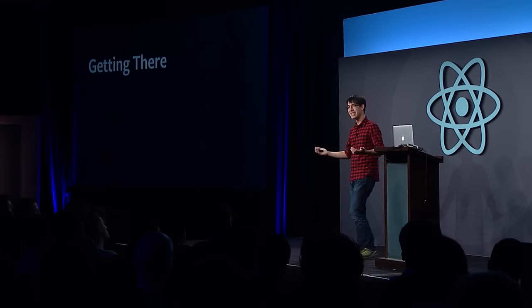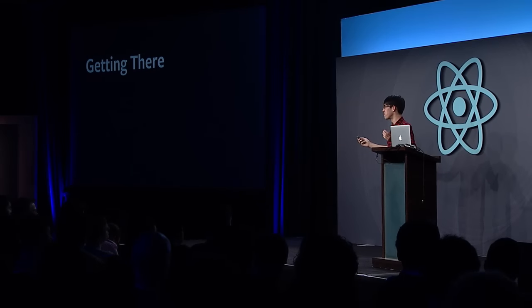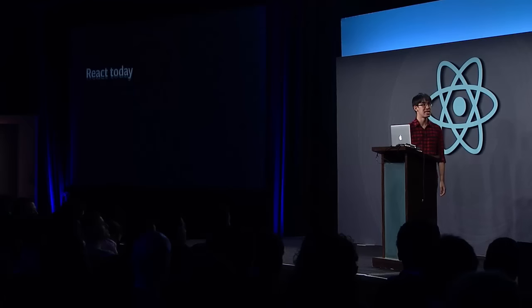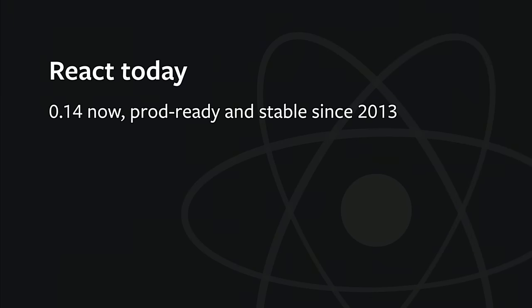So how are we going to get there? All of this is stuff we're thinking about for the future — stuff we'll probably build eventually. But it's even better if you guys can build it. We're a huge fan of all the open source work that's been going on. Right now React is version 0.14, but it's been production-ready and stable since 2013. Our next version is going to be called 15.0 — we realized that basically all versions of React we've released so far are already production-ready, so it should have a version number above 1.0. People already say React 13 and React 14, so now they can say React 15.